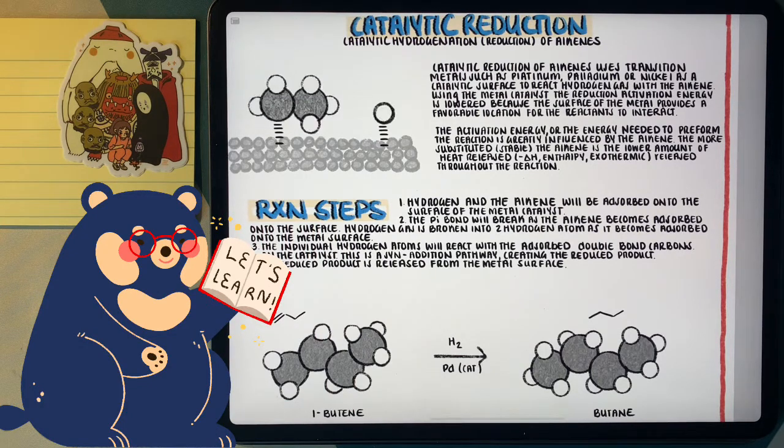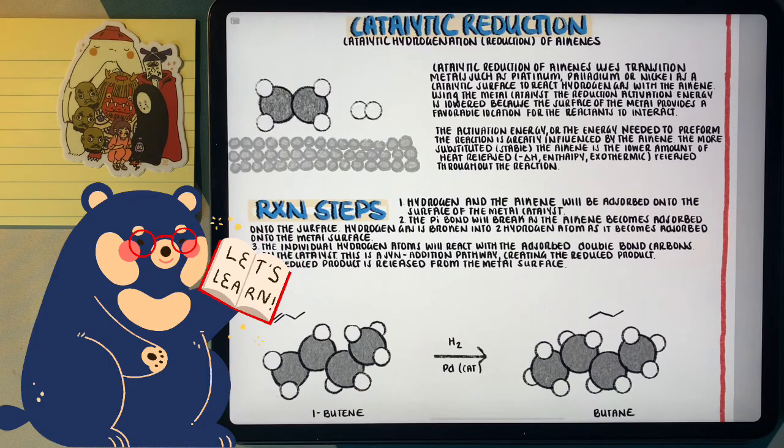Throughout this reaction, we actually use a transitional metal such as palladium, platinum, or nickel as a catalyst for the alkene and hydrogen gas to be adsorbed onto to allow the reaction to occur.